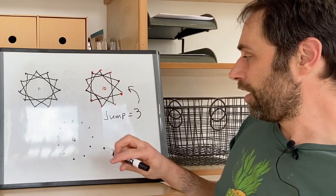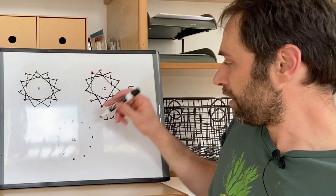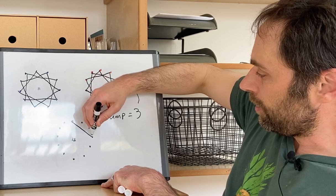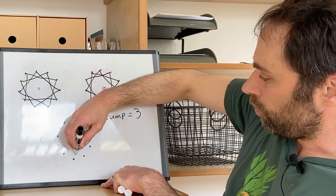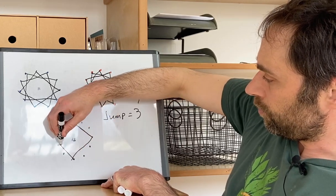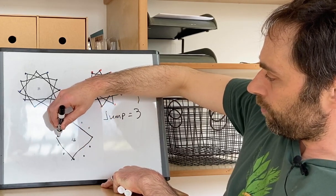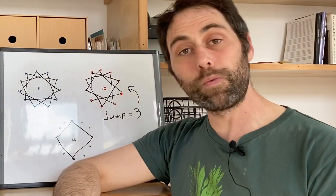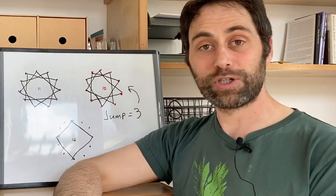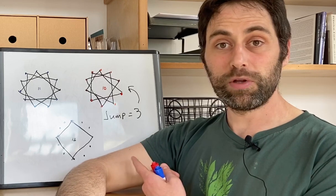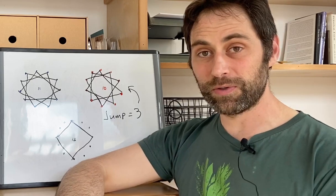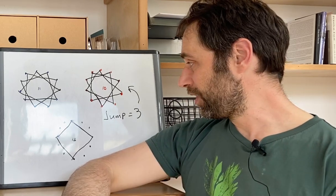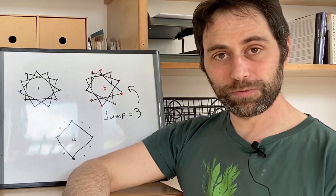Maybe I'll test it on 12. So I'll pick a dot and go 1, 2, 3, then 1, 2, 3, and so on — oh, now I'm back here. I just got a square. So right away my conjecture is false. A jump rule of 3 doesn't always work to hit all the dots. For this one it didn't work.